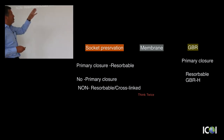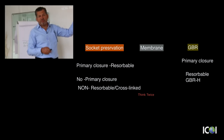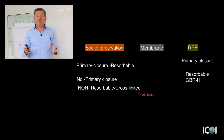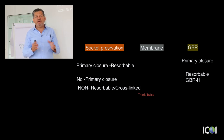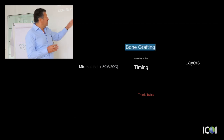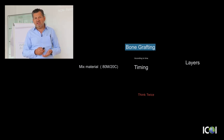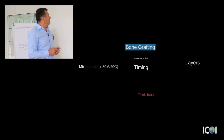When comparing GBR versus socket preservation: in GBR, primary closure is always absolutely necessary, no matter which material is used. In socket preservation, we don't aim for primary closure every time because the aim is maintaining versus creating bone.